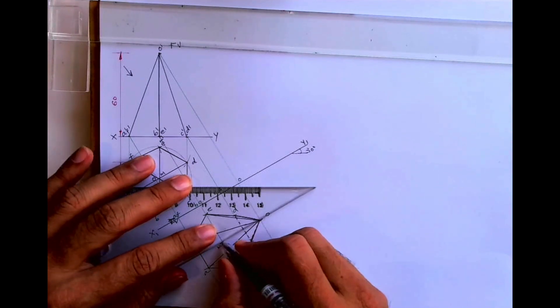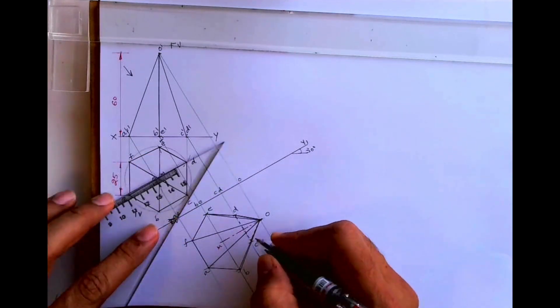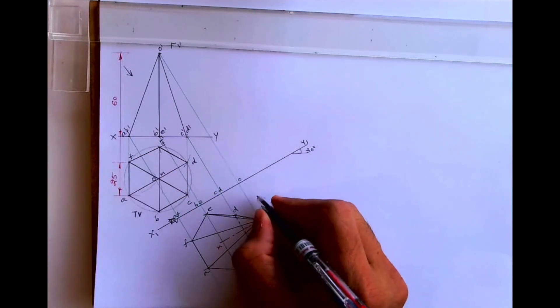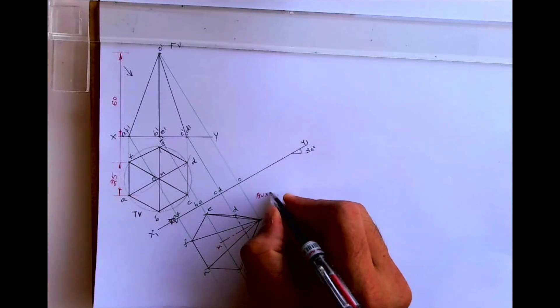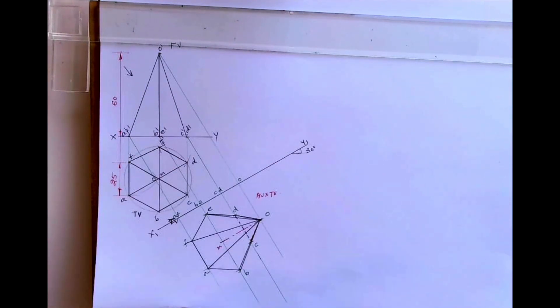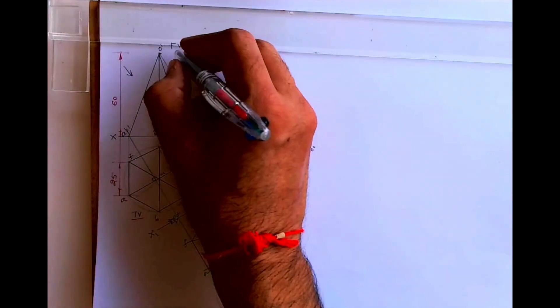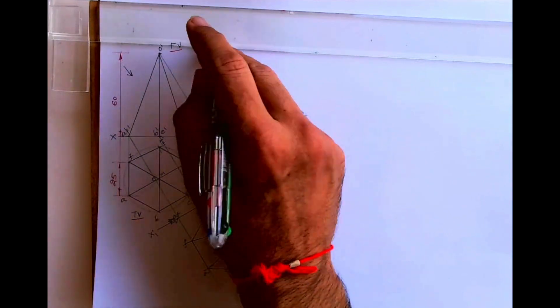This is the axis. This is the auxiliary top view. I hope you have understood this. Thank you.